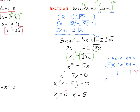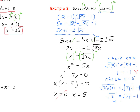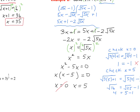Now we check x equals 5. The square root of 3 times 5 plus 1 — is that equal to the square root of 5 times 5 minus 1? The left side is the square root of 16, which is 4. The right side is the square root of 25 minus 1, which is 5 minus 1, giving us 4. We get the true statement 4 equals 4, so our final answer is only x equals 5.